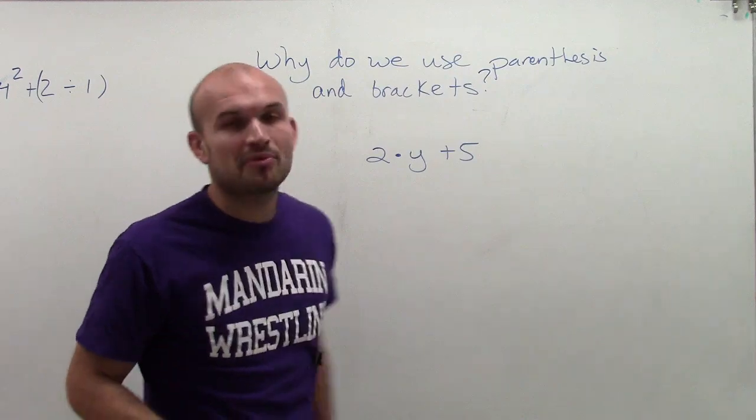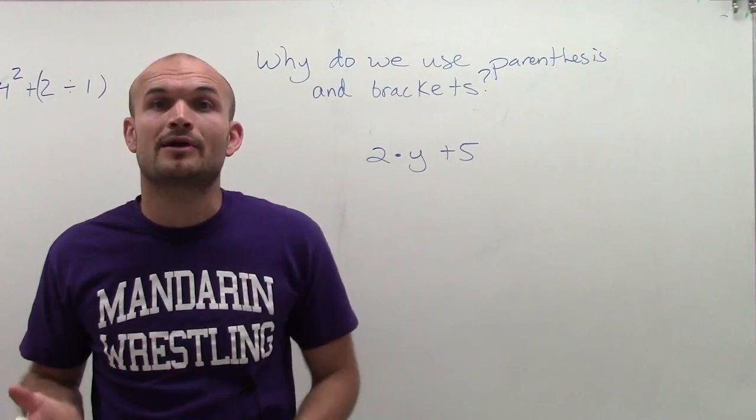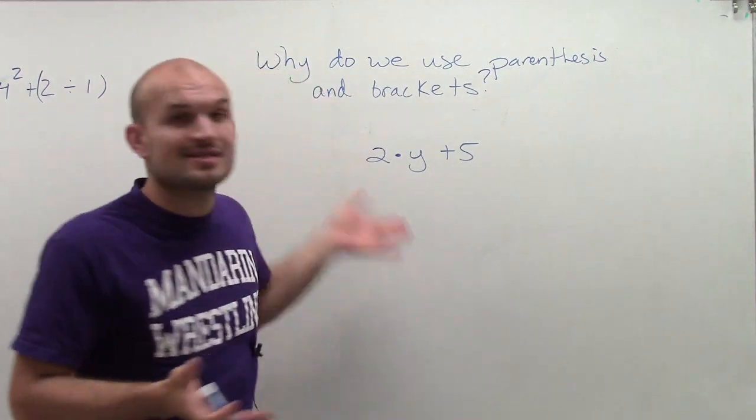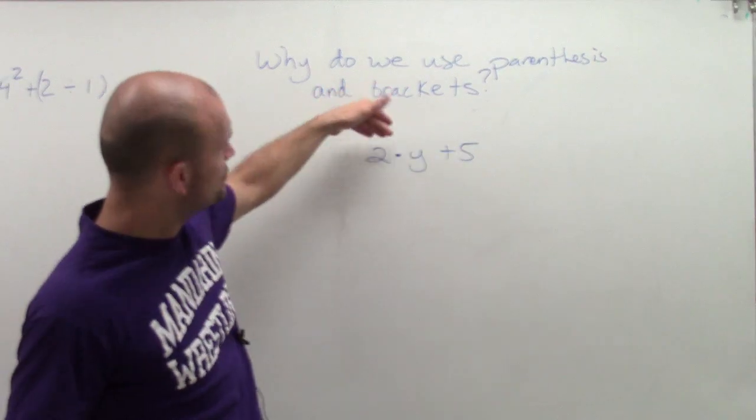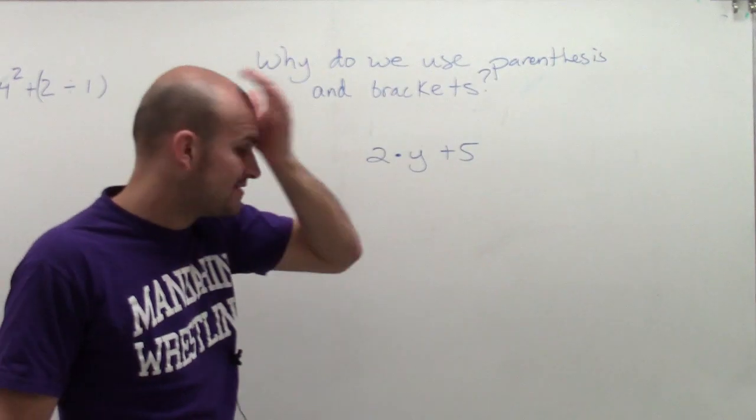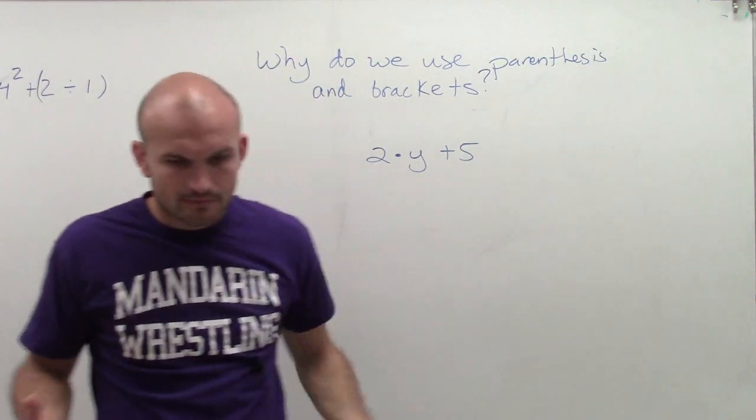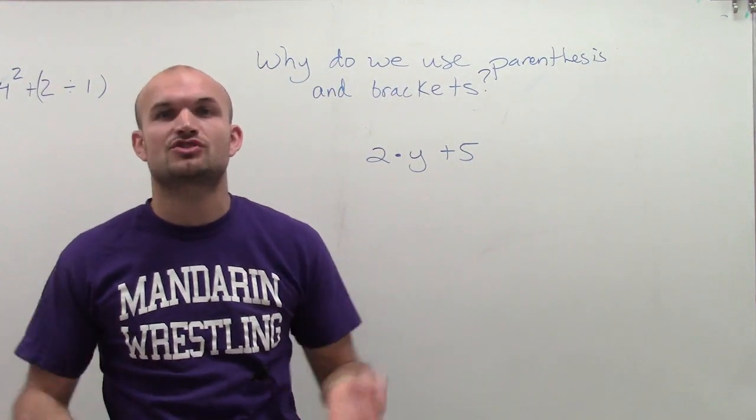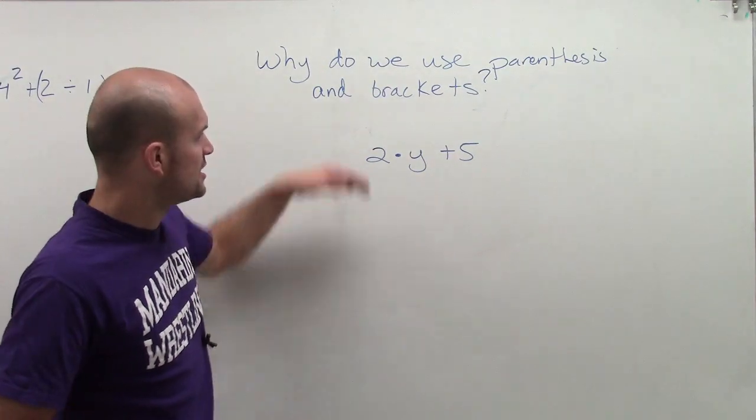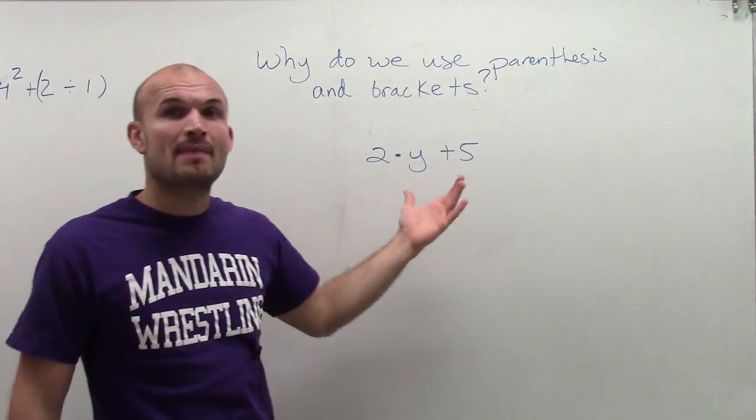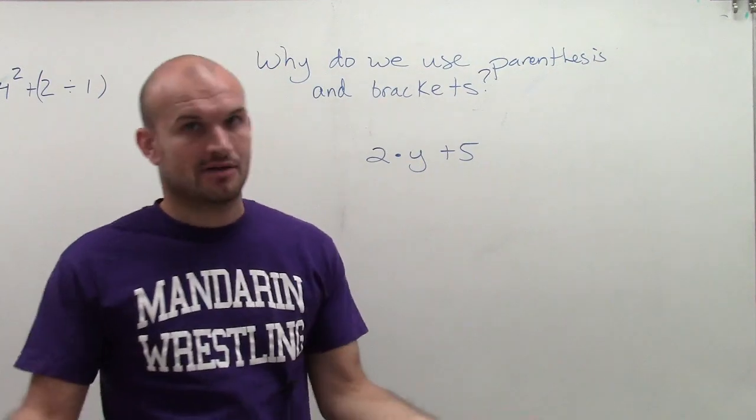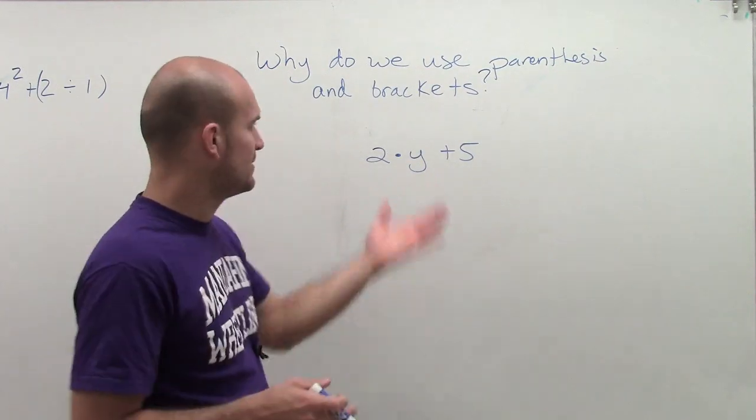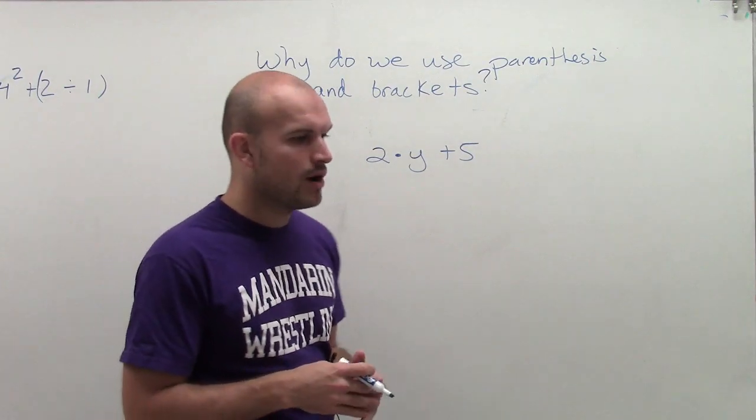So I have 2 times y plus 5. Now, using the order of operations, it's pretty obvious. By using the order of operations, you do 2 times y, multiplication first, and then add the 5. What that says, if we were going to translate this, it says 2 multiplied by a number plus 5. And that could be very well what we need to do, where we could just evaluate that for our value of y.